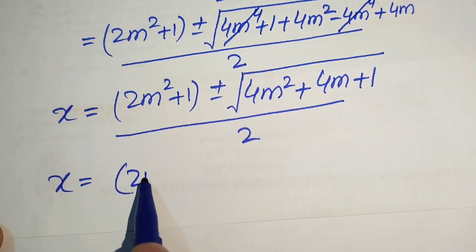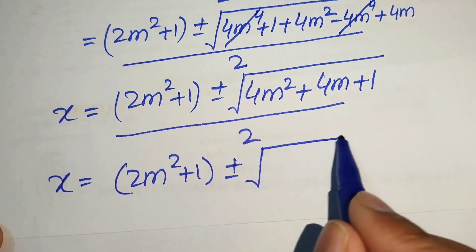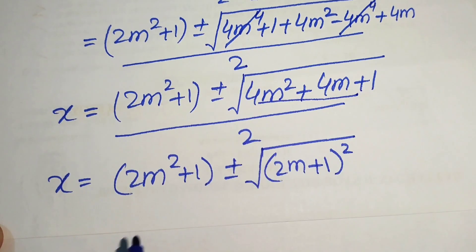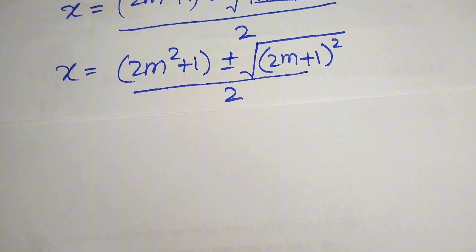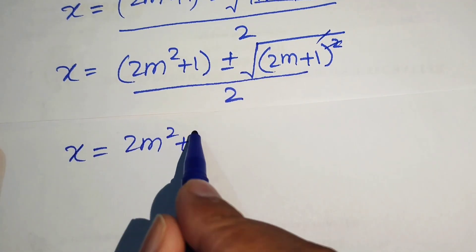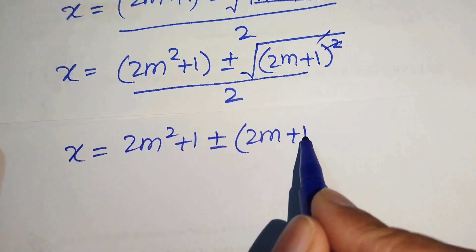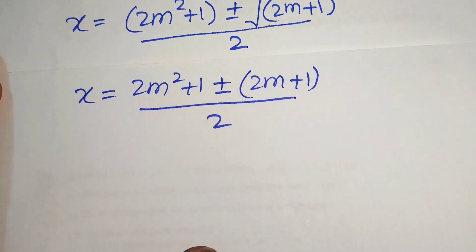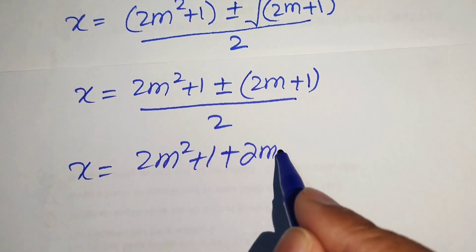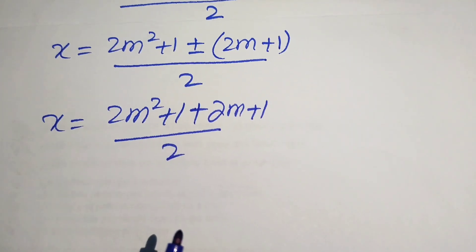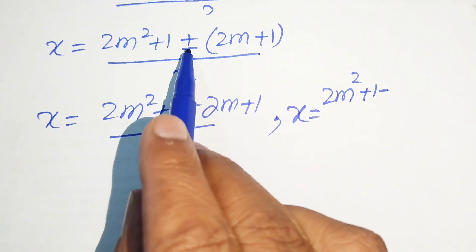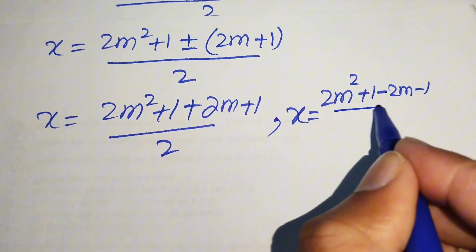We recognize that 4m² + 4m + 1 = (2m + 1)². So we write: x = (2m² + 1 ± √((2m+1)²)) / 2. The square root simplifies to (2m + 1), giving x = (2m² + 1 ± (2m + 1)) / 2.